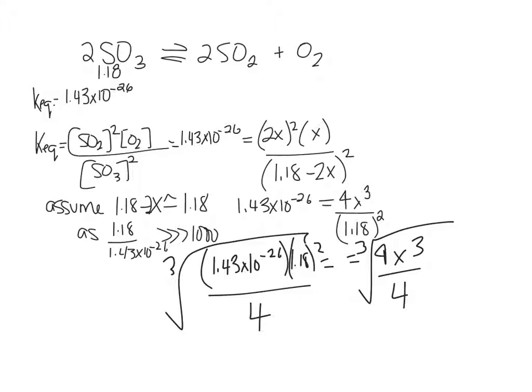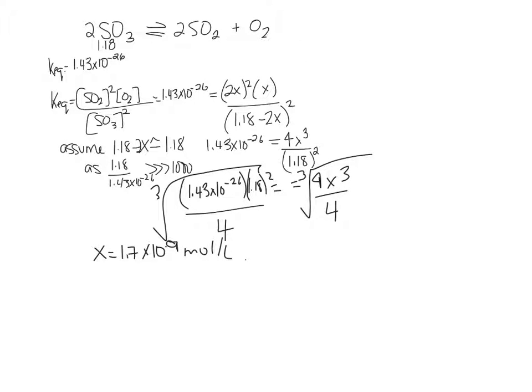It's way bigger than a thousand. So now you've got 1.43 times 10 to the negative 26 equal to 4x squared times x. What's 4x squared times x? 4x cubed over 1.18 squared. Honestly, where a lot of students make the mistake is here in some basic math, not squaring the 2 and making it 4, or not remembering to square this. Divide both sides by 4 and then find the cubed root of both sides and you will have your x. So now that you have your x, go back to your e line, plug it in, and you've got your equilibrium concentrations.